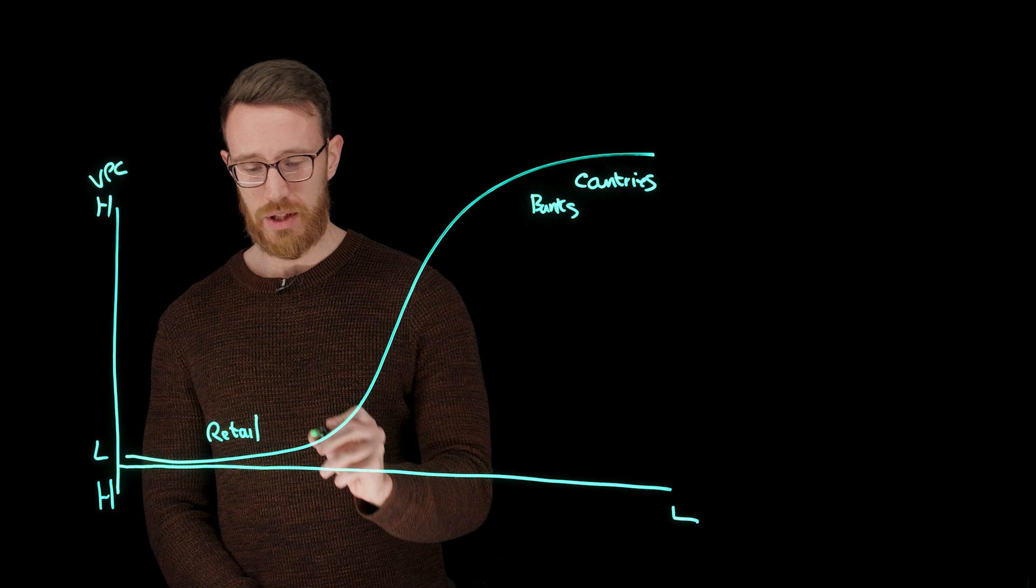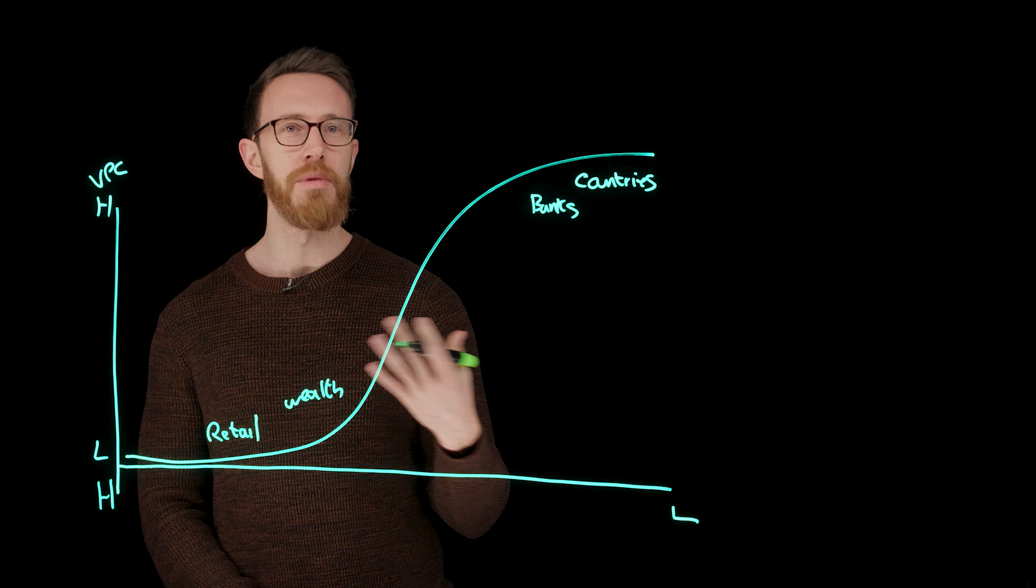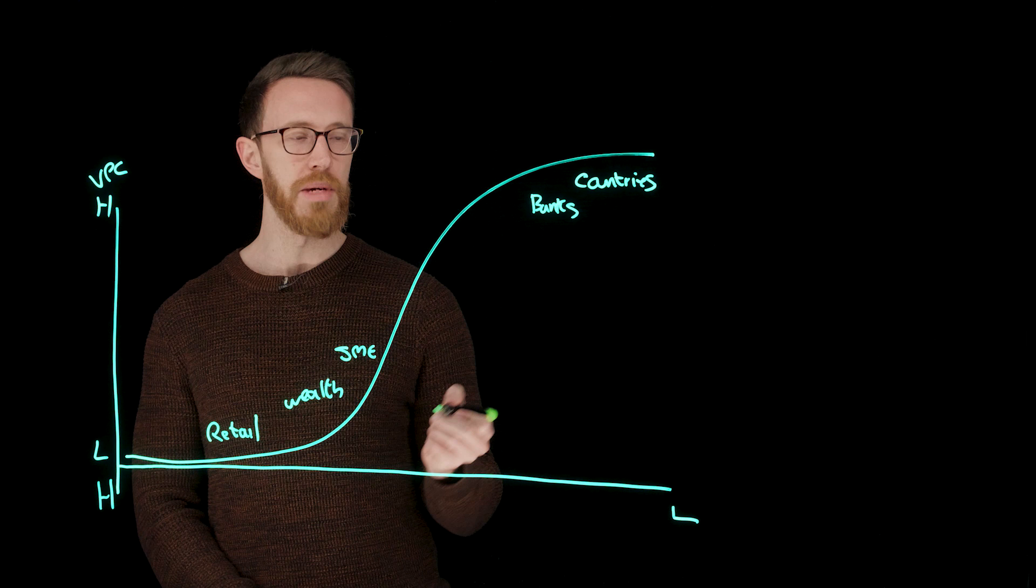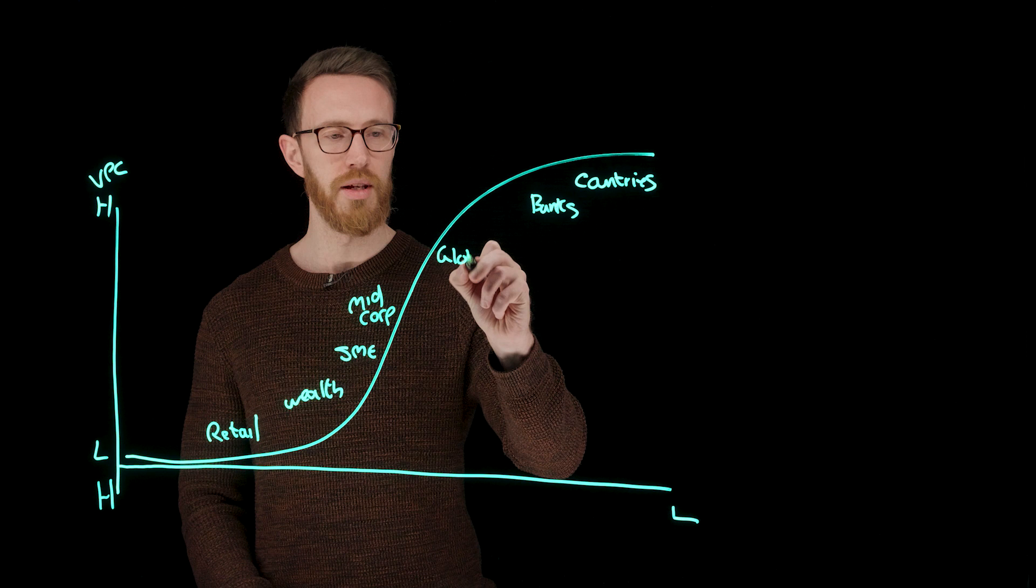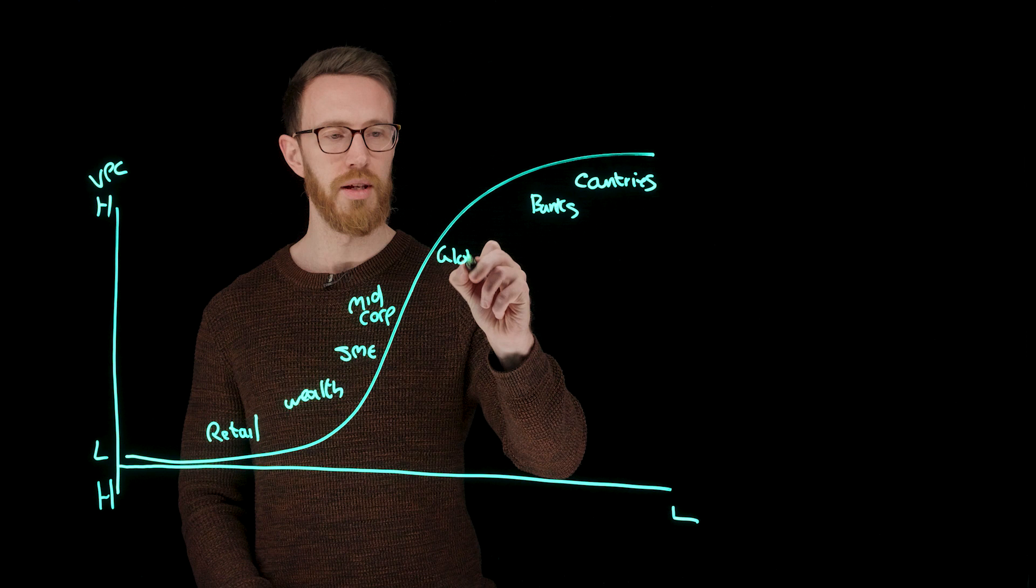Let's imagine that above retail, you might have something like wealth. Above wealth, maybe you've got small business banking or SME. Above SME, you might have things like mid-market corporates. Up here, you might have something like global corporates. And up here, you've got institutions.